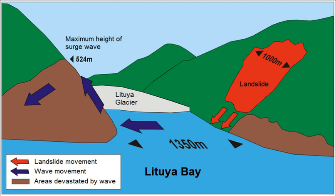A megatsunami is a very large wave created by a large, sudden displacement of material into a body of water. Megatsunamis have quite different features from other, more usual types of tsunamis. Most tsunamis are caused by underwater tectonic activity — movement of the earth's plates — and therefore occur along plate boundaries and as a result of earthquake and rise or fall in the seafloor, causing water to be displaced.